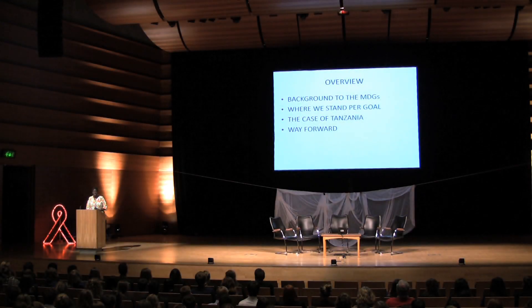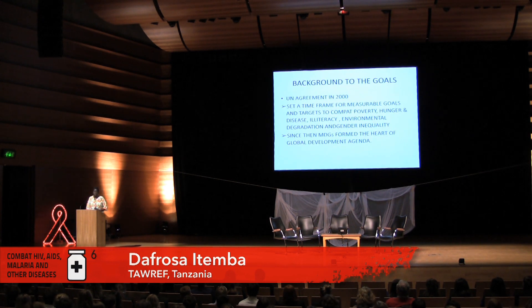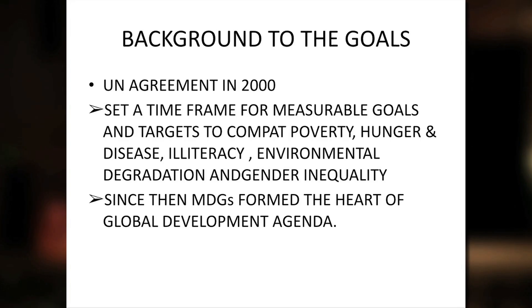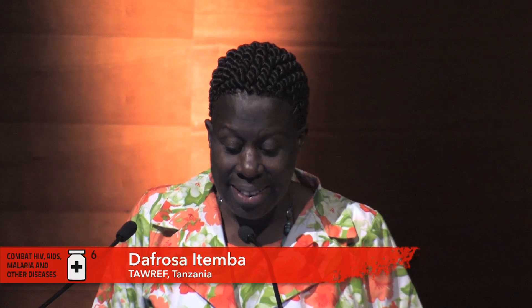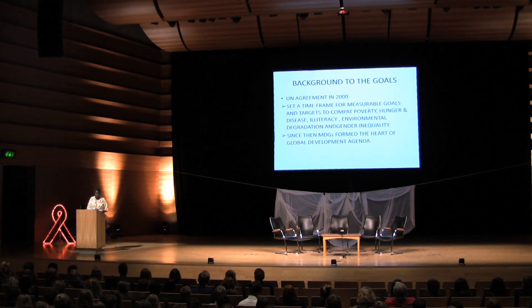The background to the MDGs: where we stand in the case of Tanzania, plus the way forward. How did they come about? In the year 2000 at the UN in New York, the presidents of different countries had an agreement to set a time frame for measurable goals and targets to manage poverty, hunger, disease, illiteracy, environmental degradation, and gender inequality. Since then, the eight goals have formed the heart of the global development agenda.